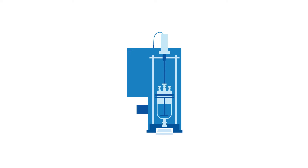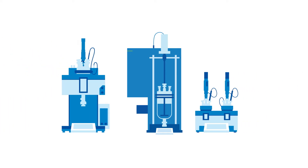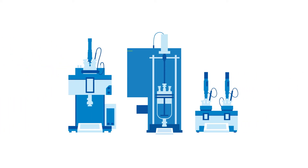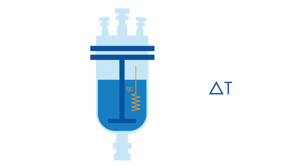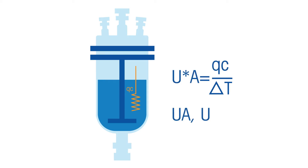To determine the conversion factor U times A, the Mettler Toledo reaction calorimeters RC1MX, EZmaxHFCal, and OptiMaxHFCal use a small electrical heater that introduces a certain amount of heat into the system under isothermal conditions. Subsequently, the response of the system is measured, which then allows the conversion factor and the overall heat transfer coefficient to be calculated.